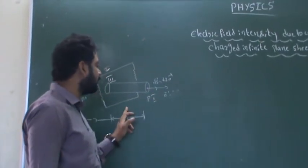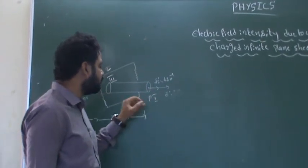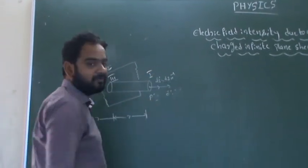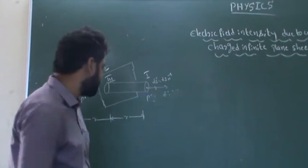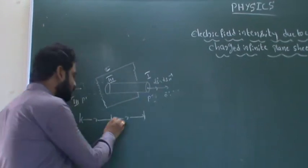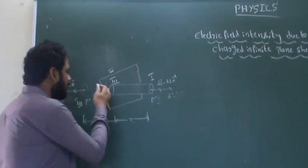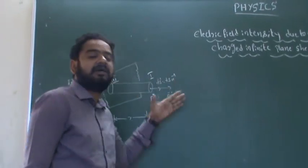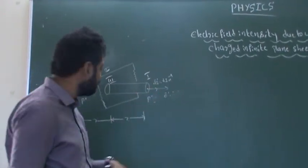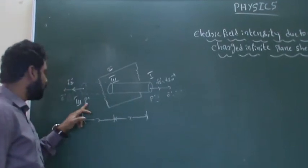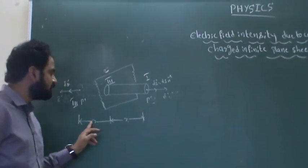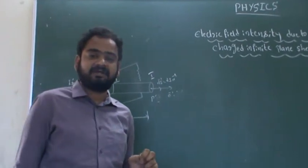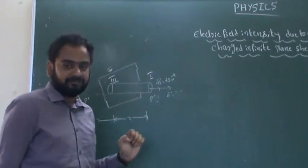We find the electrical field intensity at point P, which is at a distance r from both sides of the sheet. The imaginary Gaussian cylinder continues on the other side of the sheet also, and the distance from that point P is also r. So r is the distance from where we are finding the electrical field intensity to the plane sheet.